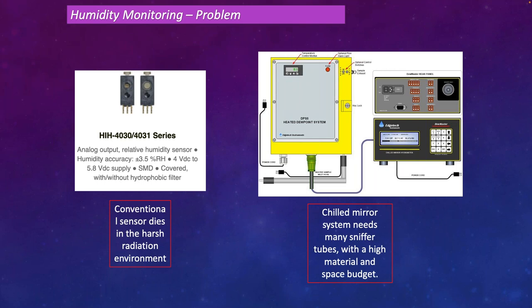Because we are working inside the inner detector, which is the closest point to the collision point, we would naturally have a higher amount of radiation that these sensors would be exposed to. So we need to find solutions for sensors that will be resistant to radiation damage. Possible solutions are currently being studied and researched, looking for radiation-hard sensors that will monitor temperature and humidity inside the inner detector.